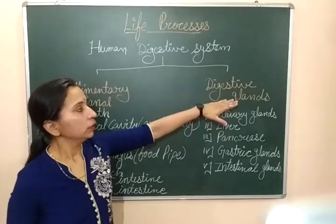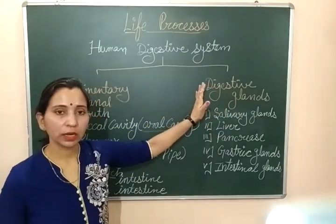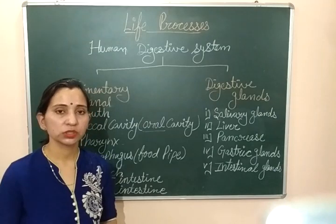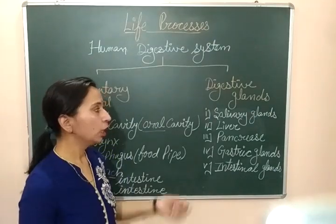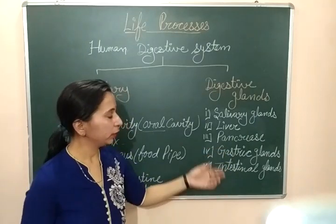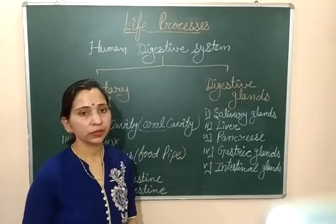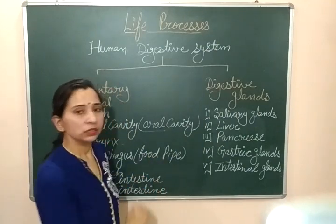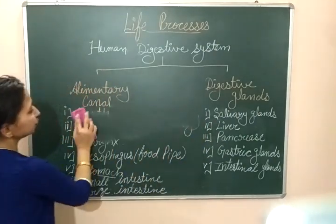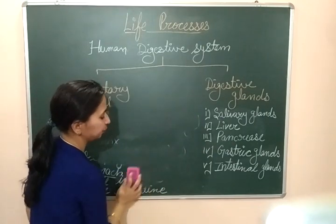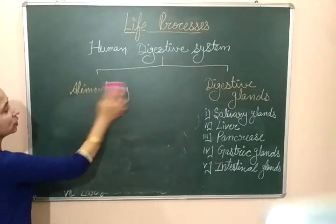Now let's talk about the digestive glands. These are the glands which help in the digestion process. The first digestive gland is the salivary glands. As the name suggests, these are the glands which secrete saliva.